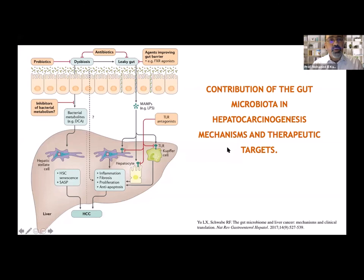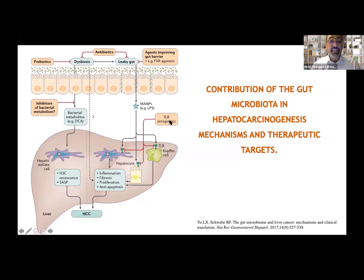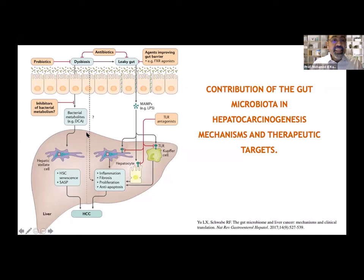To summarize the mechanisms: microbiota can lead to hepatocellular carcinoma via two main pathways — dysbiosis and leaky gut. Leaky gut leads to passage of MAMPs, especially lipopolysaccharide, which through TLR4 leads to inflammation, fibrosis, proliferation, and anti-apoptotic effects in hepatocytes. Dysbiosis leads to increased bacterial metabolites, especially oxycholic acid, with activation of hepatic stellate cells and fibrosis, along with the inflammatory cascade. Both fibrosis and the inflammatory cascade that are stimulated ultimately lead to hepatic carcinogenesis.